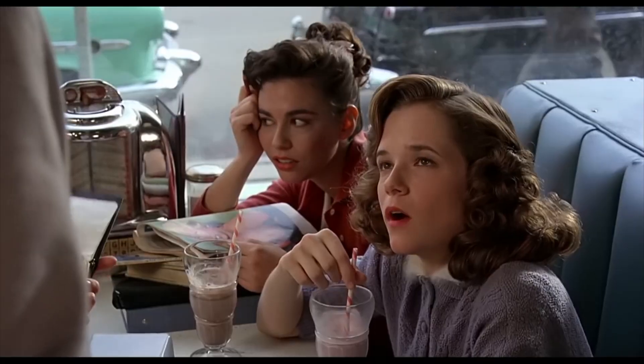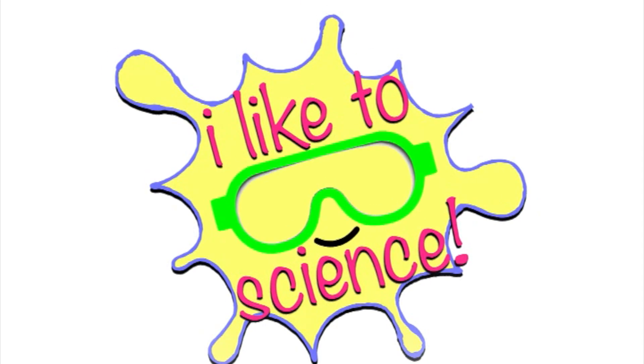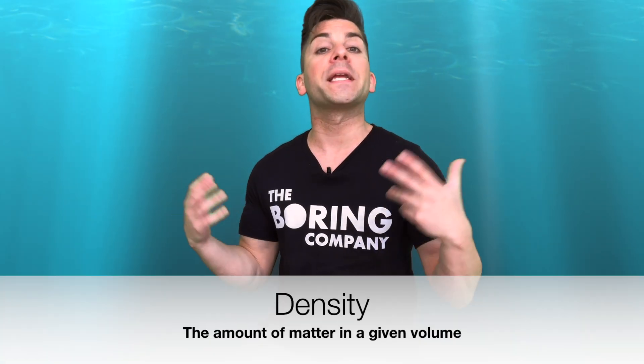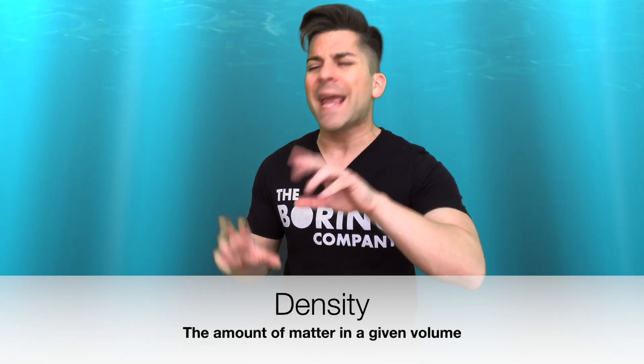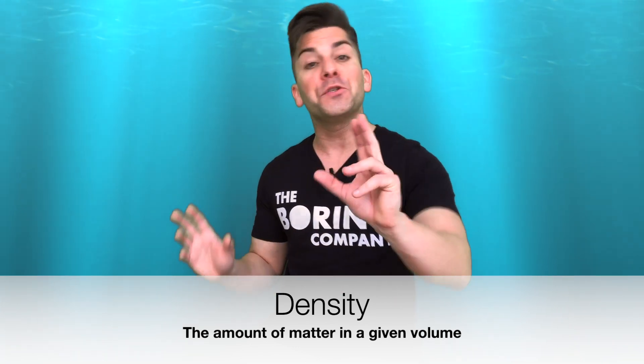We know that mass is the amount of matter in an object, and that volume is the amount of space that object takes up. But what if we wanted to know how much matter there was in an object in a certain amount of space? What is that called? Density. Density is the amount of matter in a given volume — it's how many atoms there are in a set amount of space.